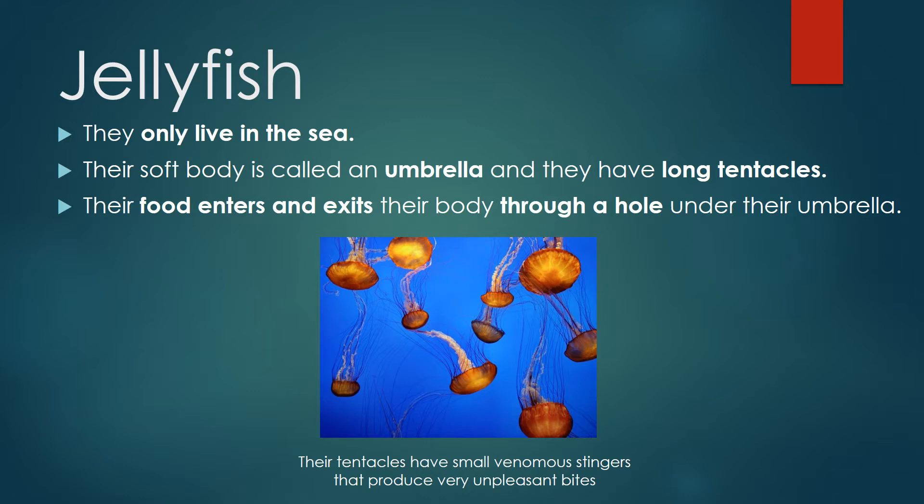Jellyfish. They only live in the sea. Their soft body is called an umbrella, and they have long tentacles. Their food enters and exits their body through a hole under their umbrella. Their tentacles have small venomous stingers that produce very unpleasant bites.